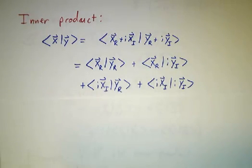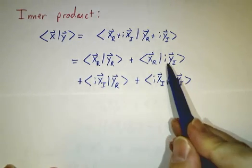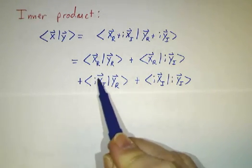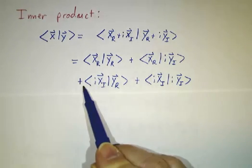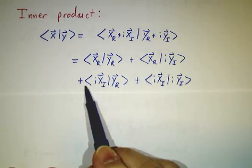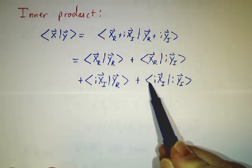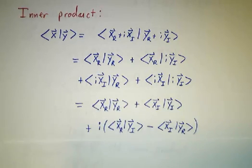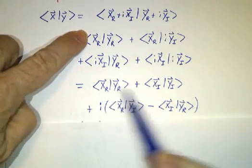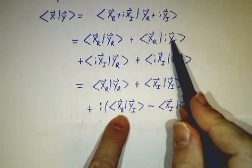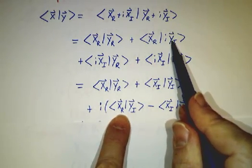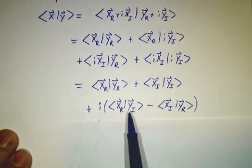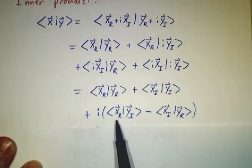Now you have to be a little bit careful when you pull the i's out. Remember, it's linear in the second factor, so when you pull an i out here you just get a factor of i. When you pull an i out here it's conjugate linear, so you have to pull out a factor of the conjugate of i, which is minus i. Here you pull out an i from the right factor, a minus i from the left factor — minus i times i is 1, so it just pulls out a factor of 1. So we wind up with this piece, plus this piece where the i's cancel, plus this piece where you pull out a factor of i, and this piece where you pull out a factor of minus i. That is the rule for how to take the inner product of two complex vectors built out of real and imaginary parts.